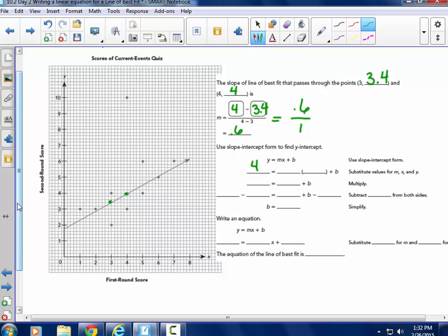So using the slope intercept form to find the Y intercept, 4 was the Y value. I'm going to use the point 4, 4 in the equation Y equals MX plus B. So the Y value is 4, my slope is 0.6, my X value is 4, and I get that 4 equals 2.4 plus B. I'm going to subtract 2.4 from both sides. So 4 minus 2.4. These cancel.